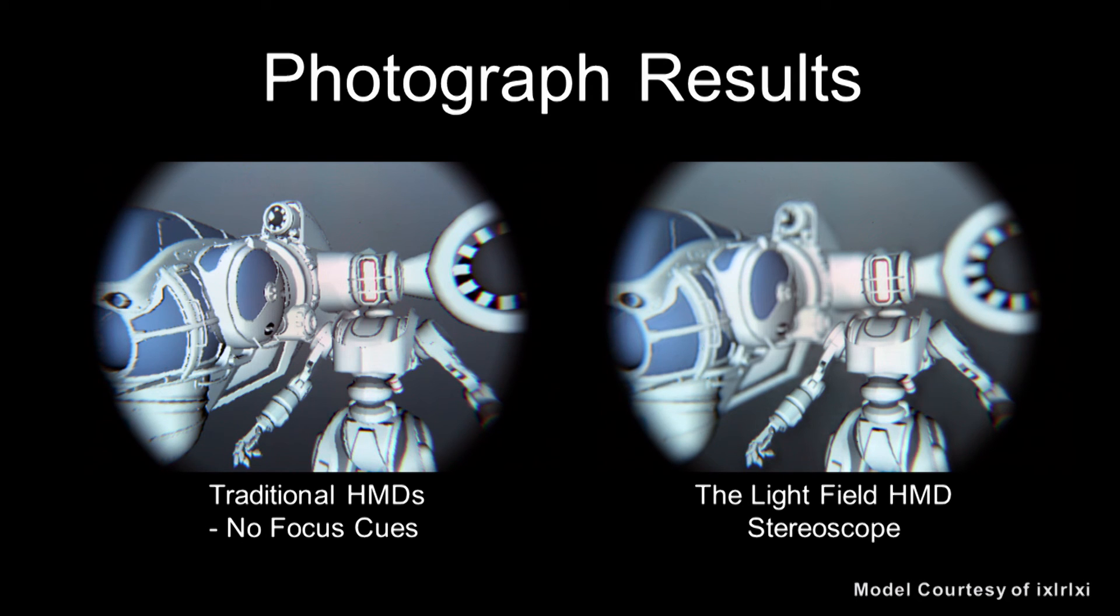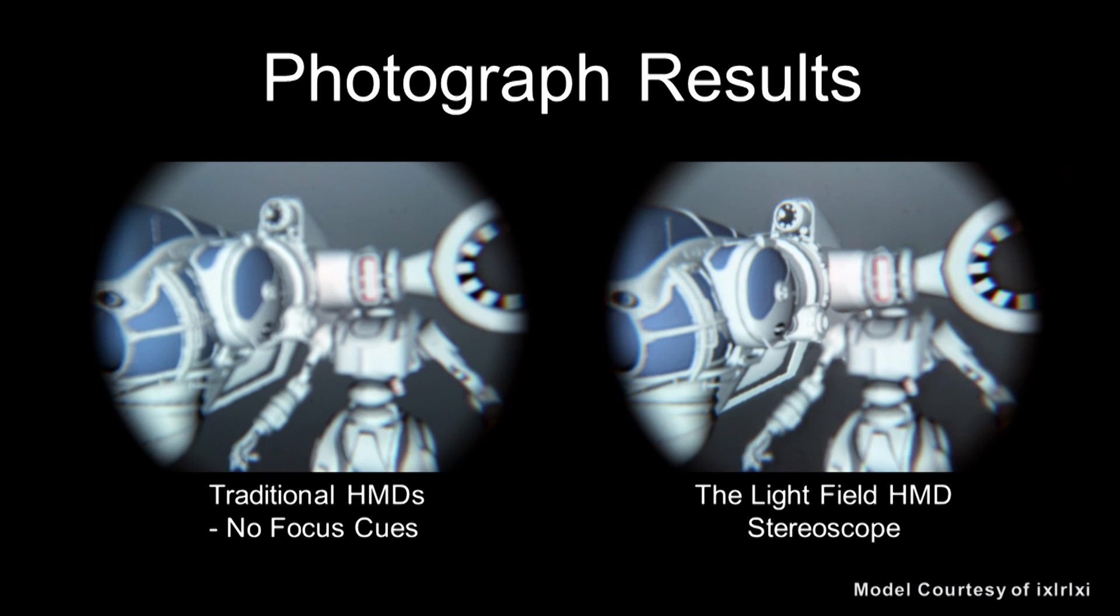Here's the photograph result from this VR head mount. On the left-hand side, you can see the traditional head mount. The image looks pretty flat, although it is sharp. On the right-hand side, the VR head mount, you can actually focus on the foreground, leaving the background out of focus, or you can focus onto the background and the foreground out of focus.